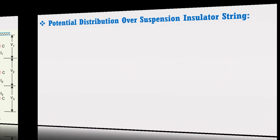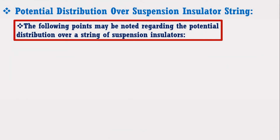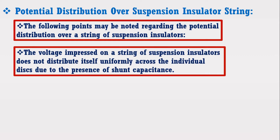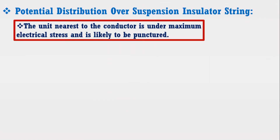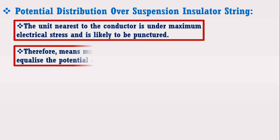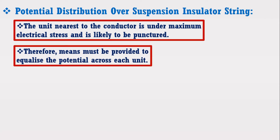The following points may be noted regarding the potential distribution over a string of suspension insulators. The voltage impressed on a string of suspension insulators does not distribute itself uniformly across the individual disks due to the presence of shunt capacitance. The disk nearest to the conductor has maximum voltage across it. As we move towards the cross arm, the voltage across each disk goes on decreasing. The unit nearest to the conductor is under maximum electrical stress and is likely to be punctured. Therefore, some methods must be provided to equalize the potential across each unit.